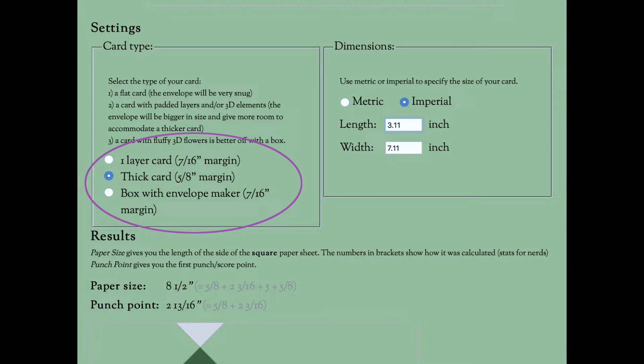You tell it whether it's one layer or a thick card or a box, and then you can put in your length and width of your card. It tells you the paper size to cut and the punch point to start, and it just makes it so easy.